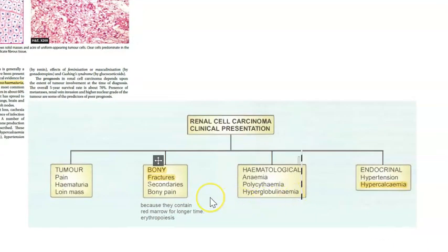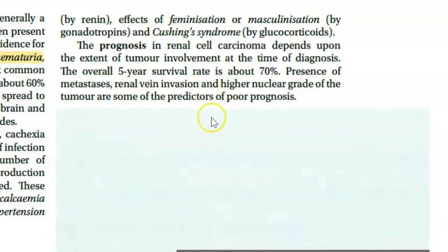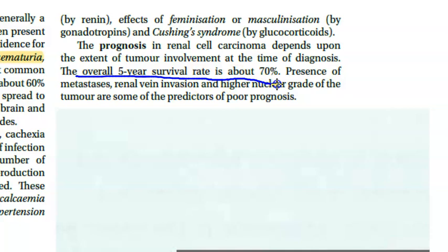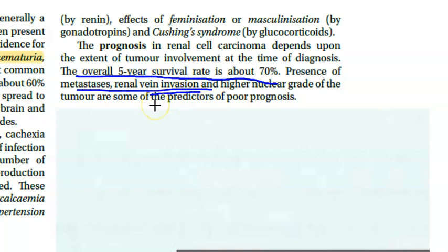The prognosis of renal cell carcinoma: the five-year survival rate is about 70 percent overall, which is not bad. However if there is metastasis or invasion of the renal vein, the prognosis is poor.